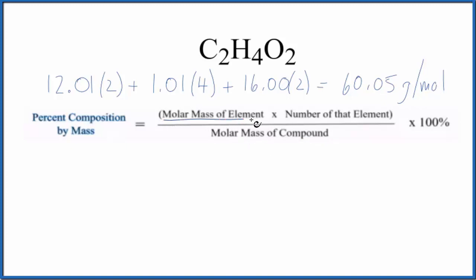Now we can work with each element. Let's start with carbon. Carbon on the periodic table has an atomic mass of 12.01, and the units are grams per mole. That's the molar mass for the element there. The number of the element, that is two. So we have two carbons. We put a two there, and then we're going to divide this by the molar mass of the compound.